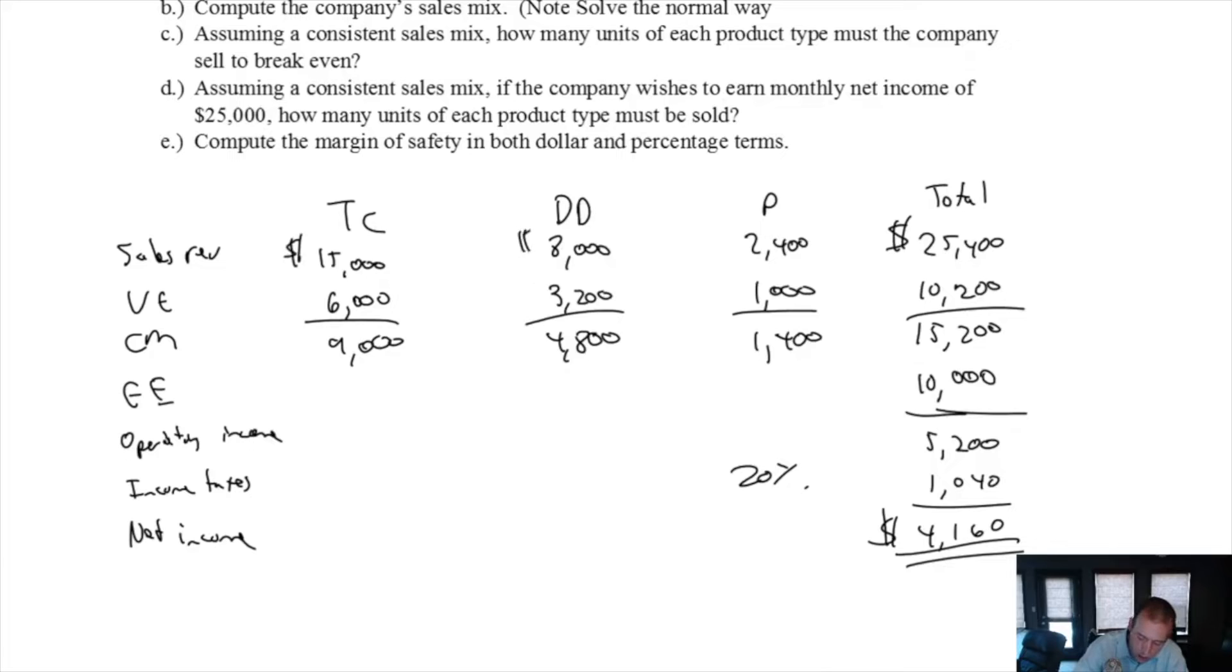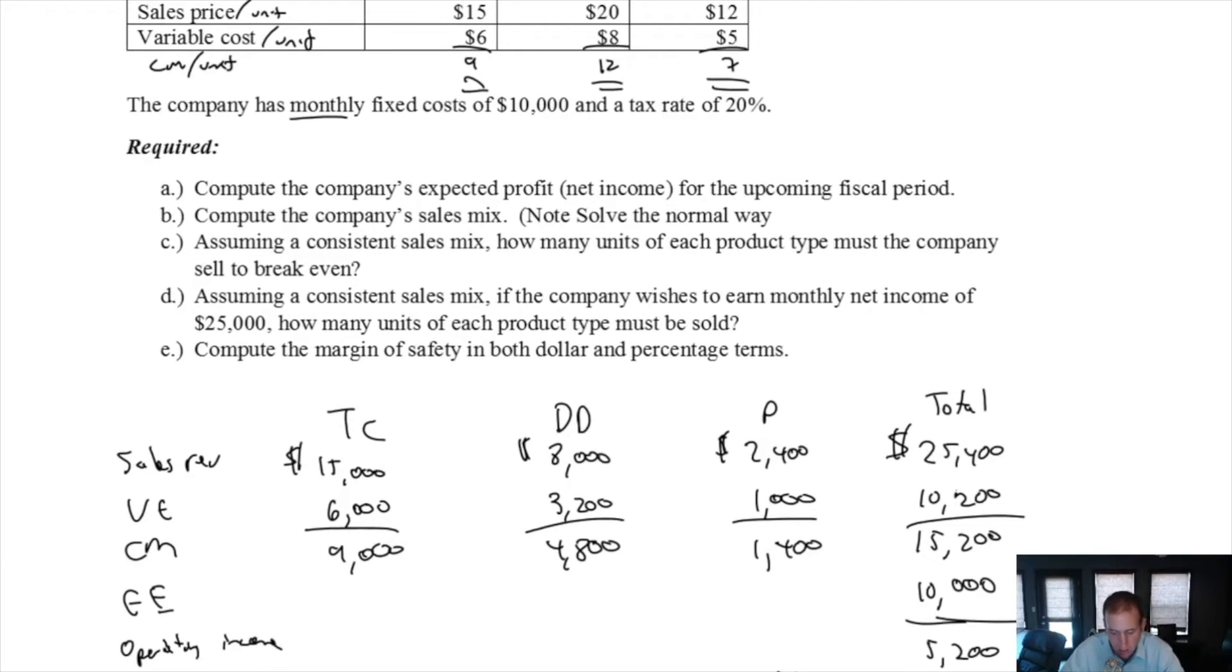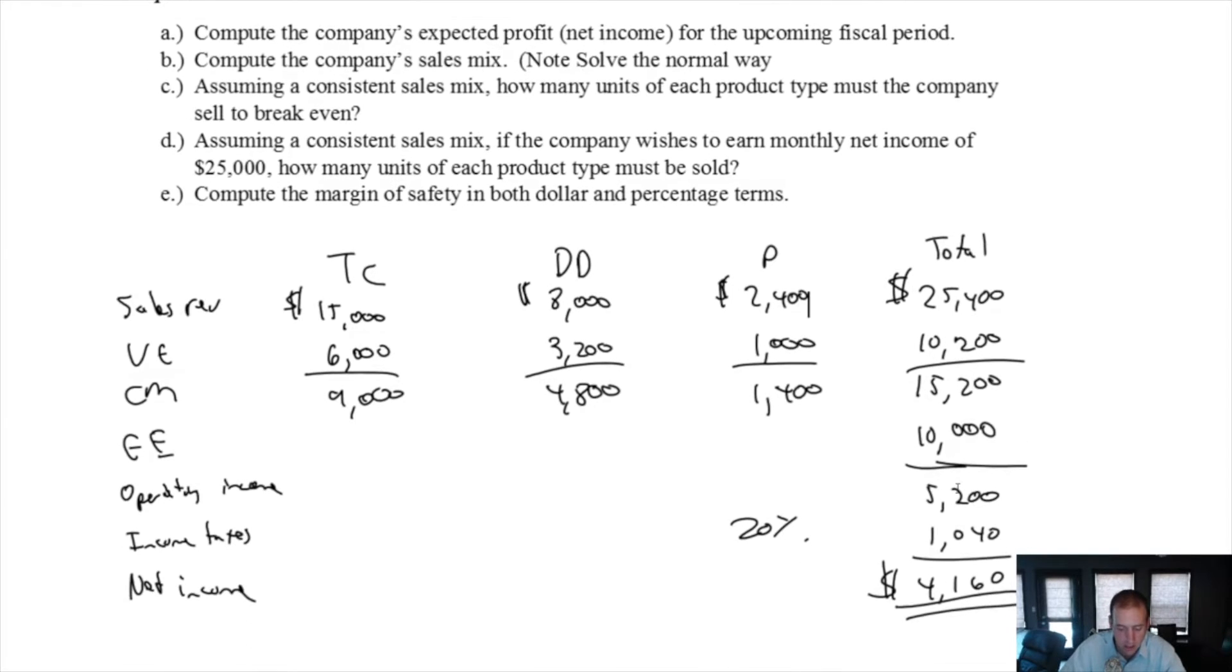Leaving them net income of $4,160. So there we've got it, we've figured out our net income. We've prepared a full income statement. We didn't necessarily have to, but there's our expected profit, our expected net income after tax for the upcoming fiscal year.